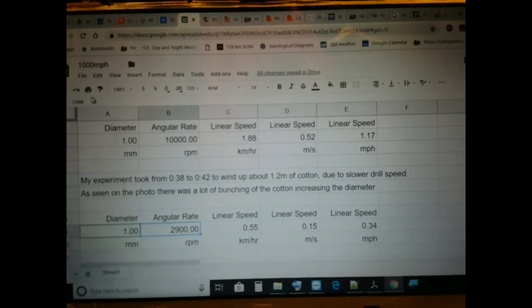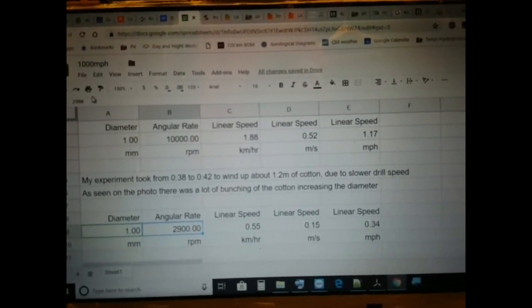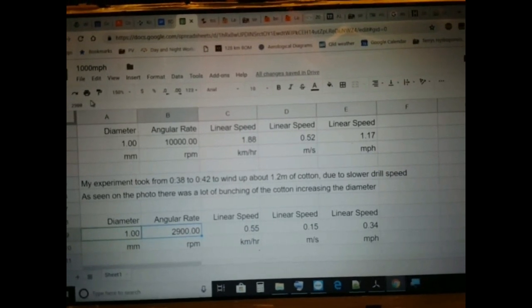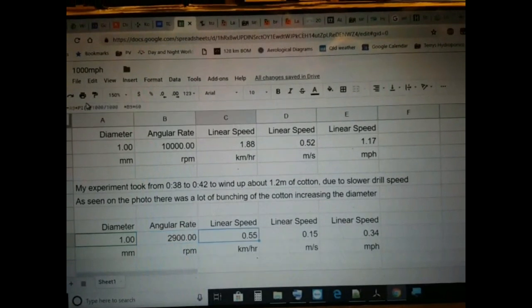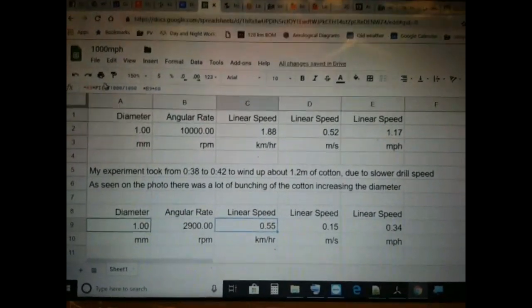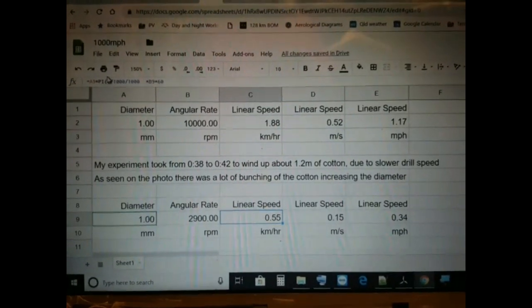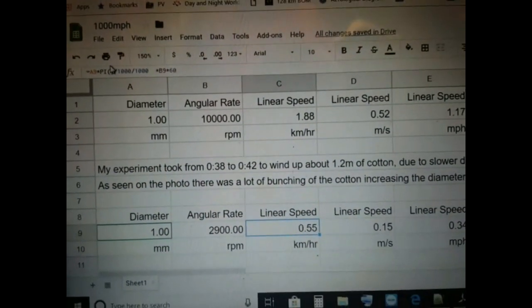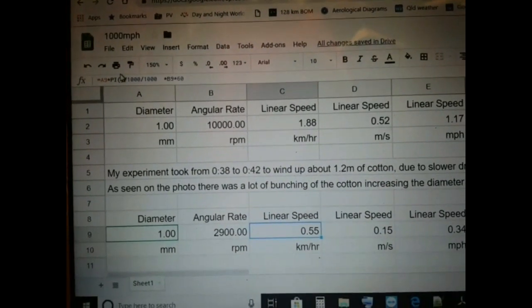Okay, so this is the rough spreadsheet for Wolfie. I've got the diameter is one millimeter. The angular rate from my drill was 2,900 RPM and for conspiracy cats I better do my working as my physics teacher told me. So it comes out as 0.5 kilometers per hour linear speed.